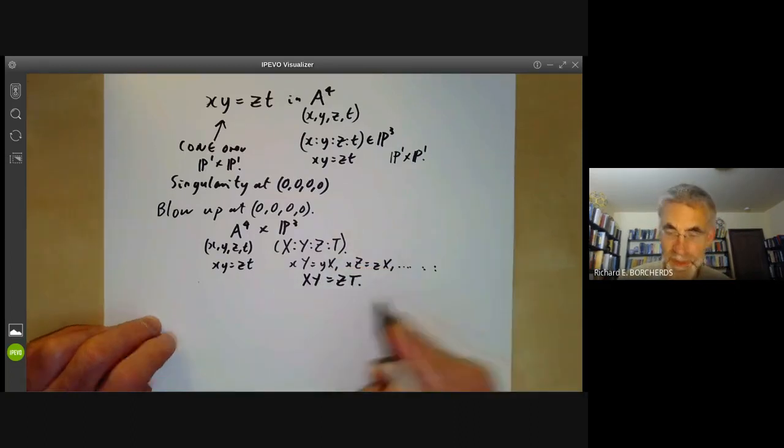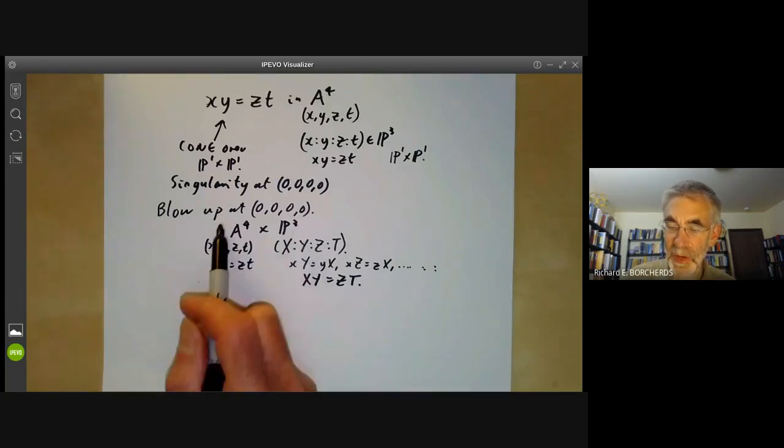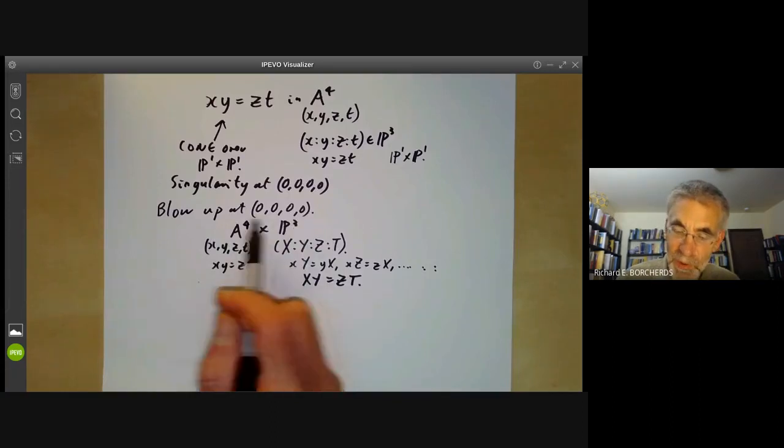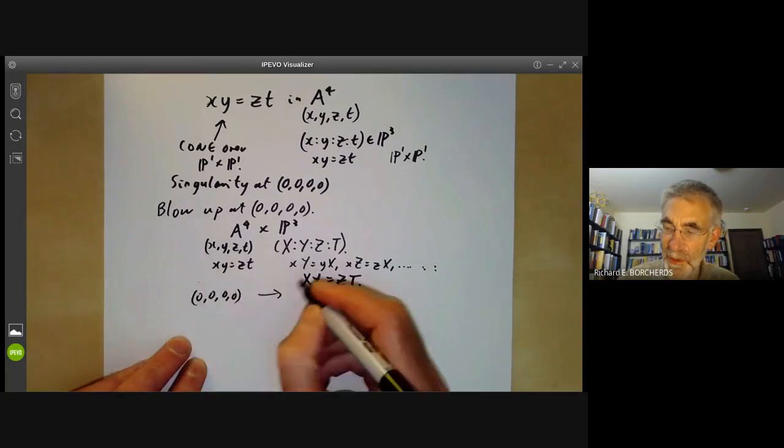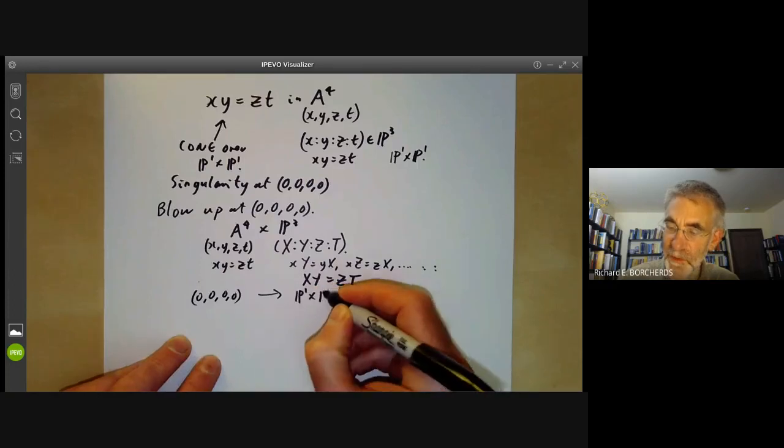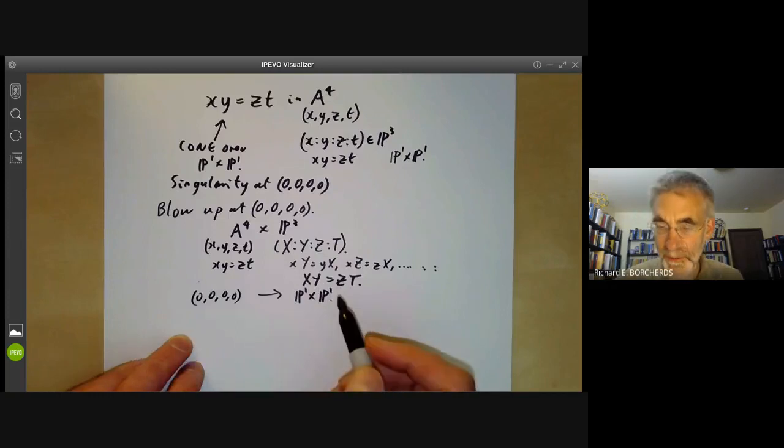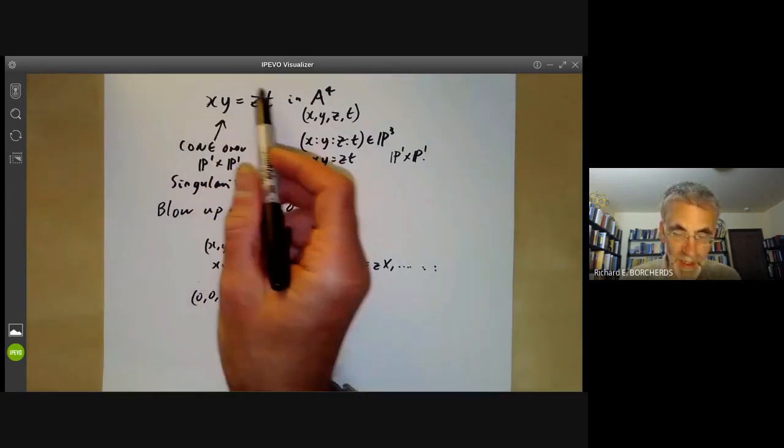What happens is each point in A4 other than the origin corresponds to a unique point in this blow-up, whereas the point (0,0,0,0) in A4 becomes an entire copy of P1 times P1, because it consists of all the points X, Y, Z, T satisfying this equation.